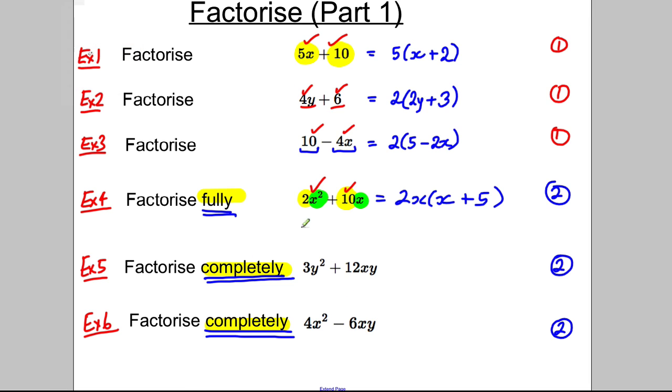Same thing here with factorize completely. Deal with the numbers: there's 3 and 12, and there's y² and xy. What's the biggest factor we can take out of 3 and 12? It's 3. What about y² and xy? We can take a y out. What must be inside the brackets? What needs to go here so when I multiply it by 3y I get 3y²? Clearly a y. Put in your plus sign. What must go here? 4x. Let's expand out: 3y × y is 3y², 3y × positive 4x is positive 12xy.